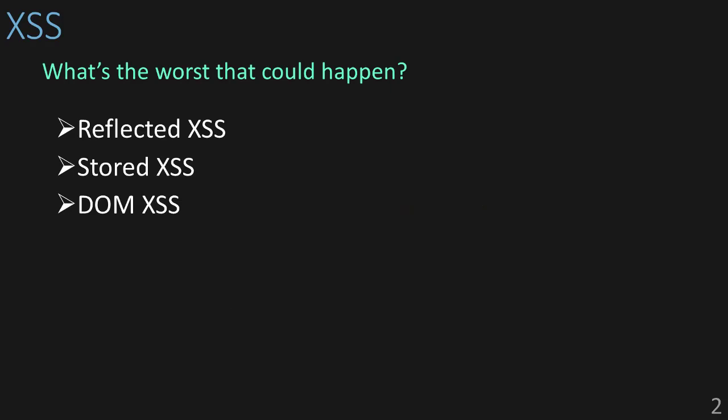At its core, cross-site scripting is a vulnerability that allows us to modify the source code of a web page. Typically, when an attacker is exploiting a cross-site vulnerability, their goal is to execute JavaScript, because JavaScript allows us to control everything in a browser. There are three categories of cross-site scripting: reflected, stored, and DOM. They all lead to the same kind of code execution, but their attack vectors are what's different. We're going to take a look at each of these in a little more detail.